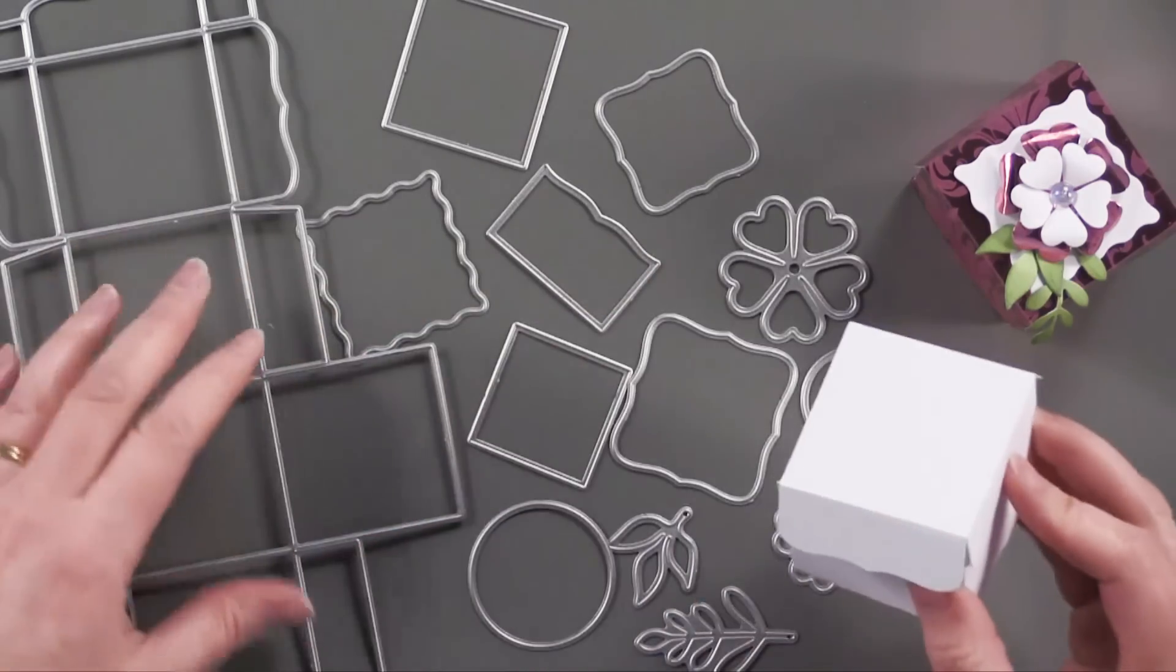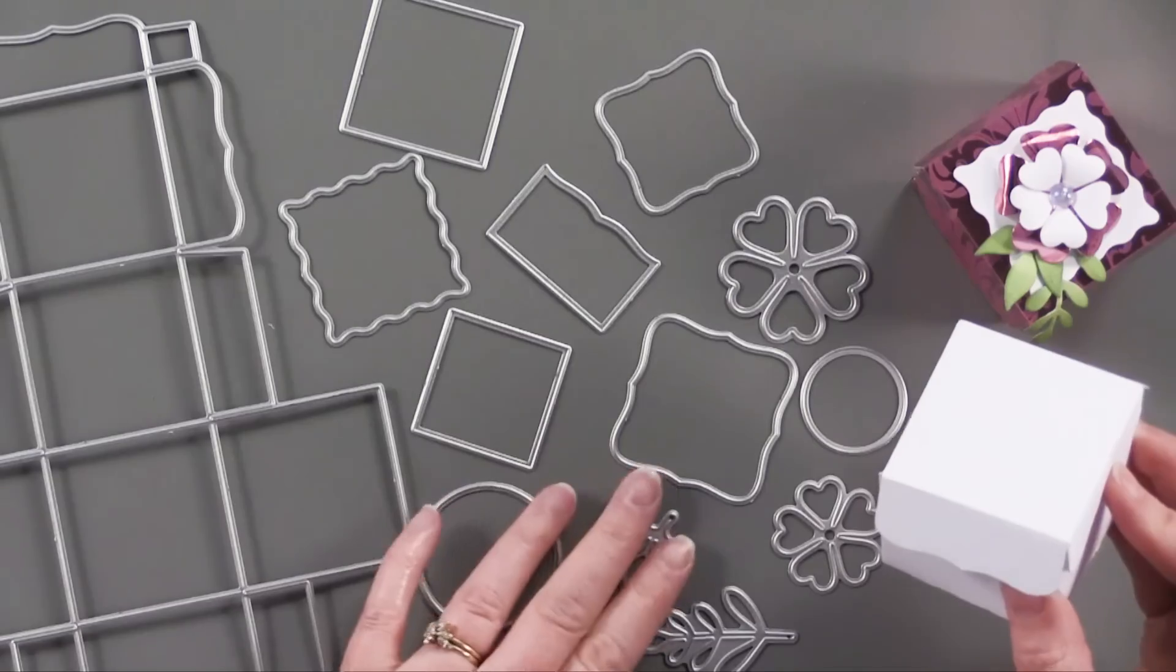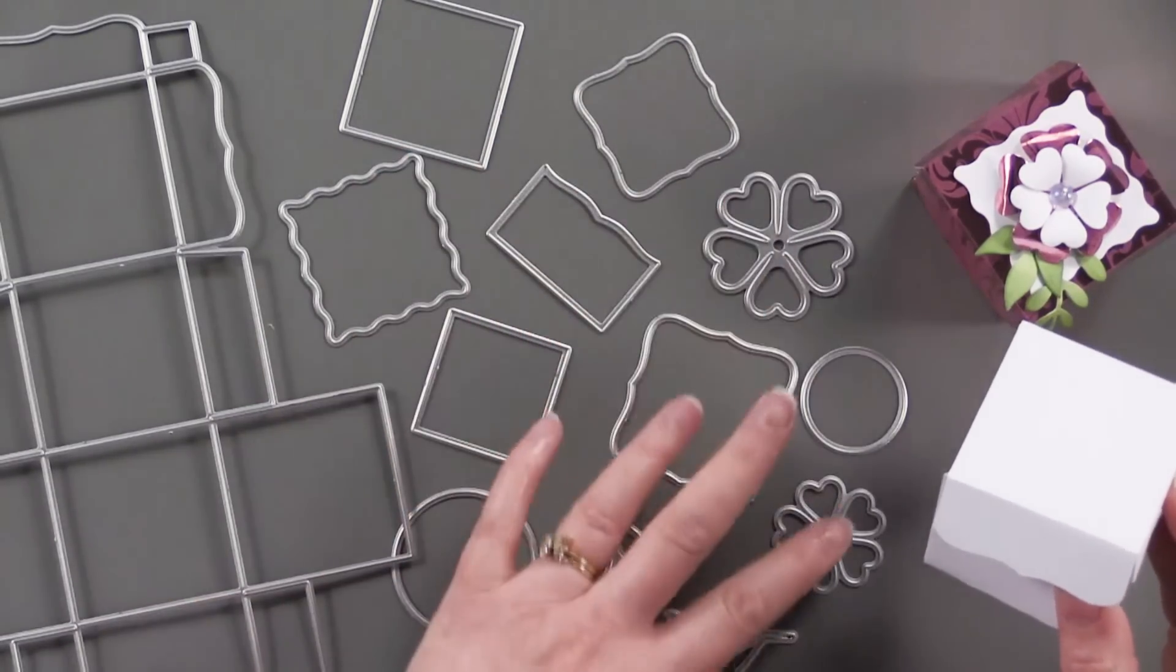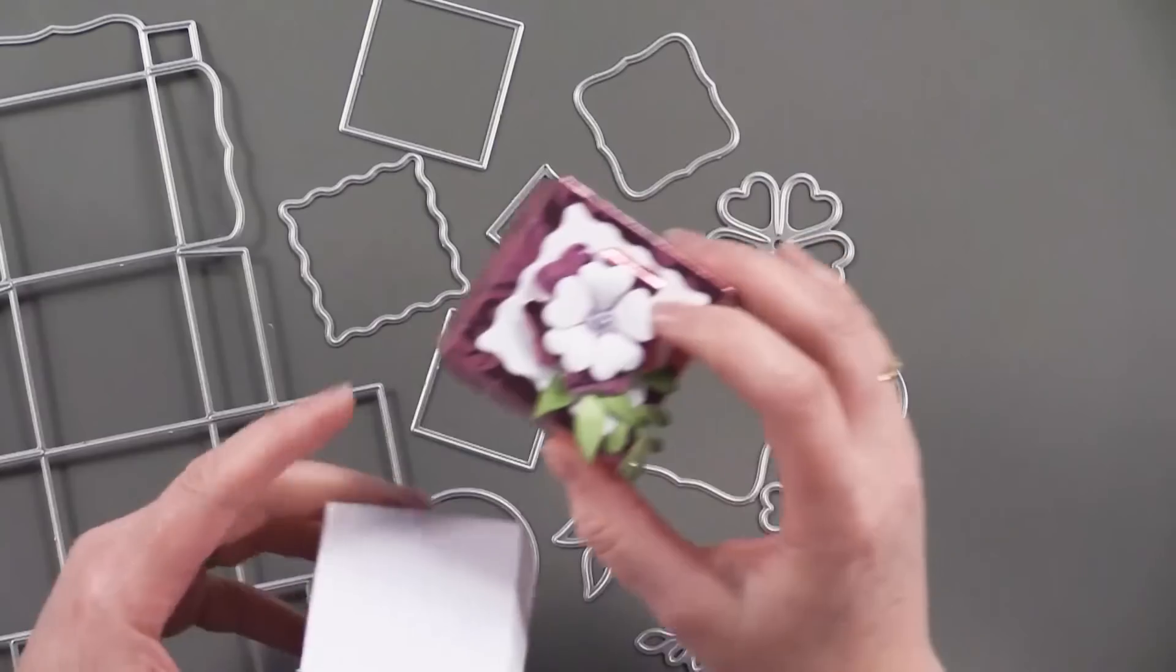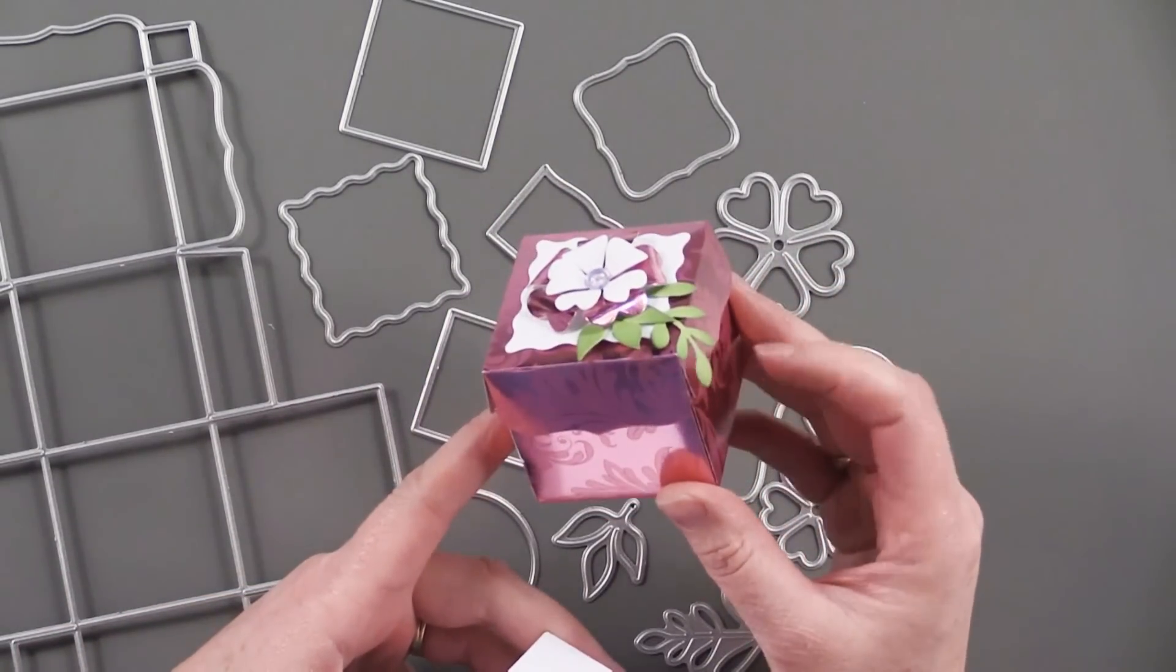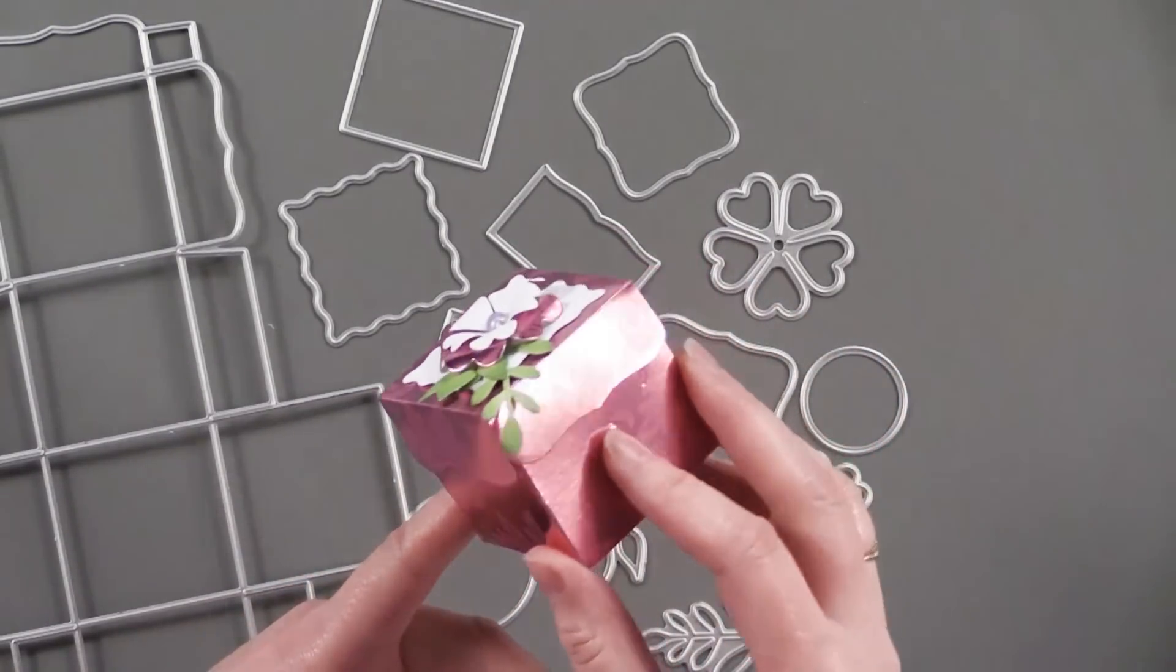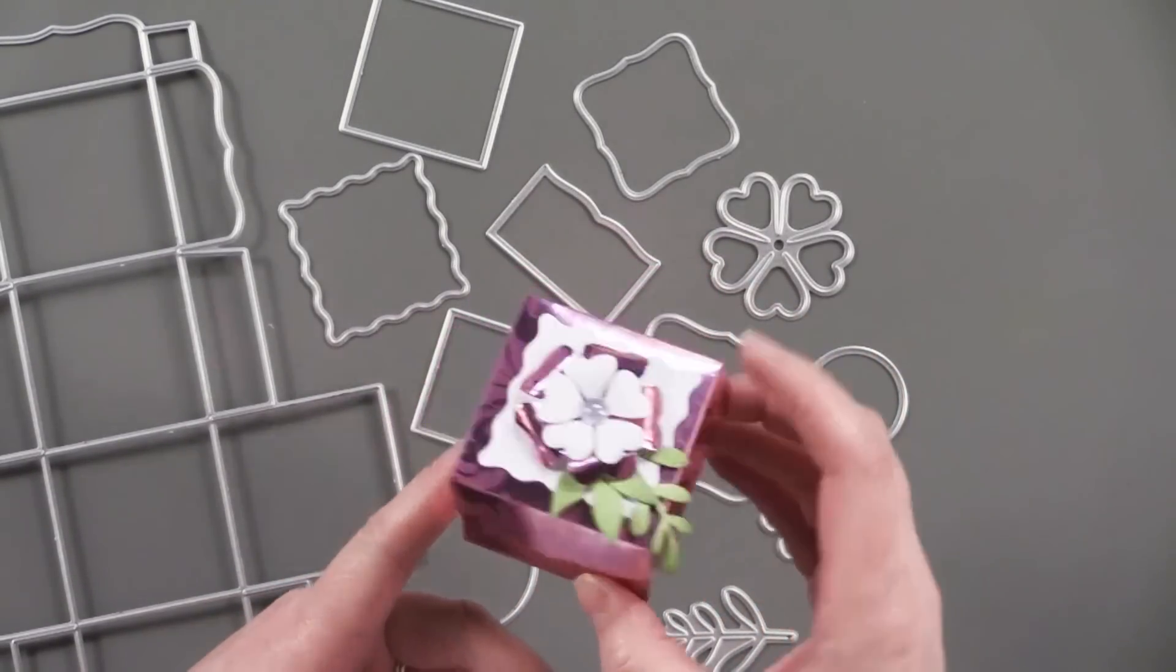And then it's got all of these wonderful little squares, which you could use for card making as well, and also these little flowers. These particular flowers, when I die cut them from the pink flourish paper, it's a metallic, wonderful, rather foil paper from Hot Off the Press.